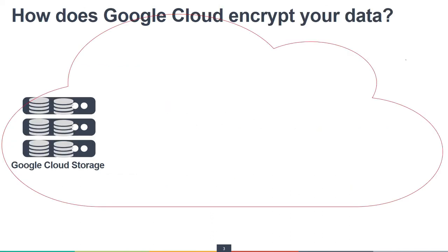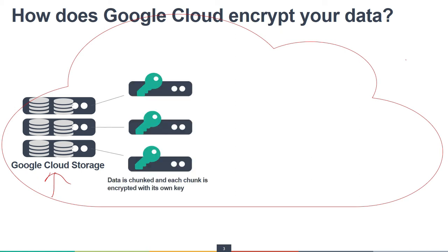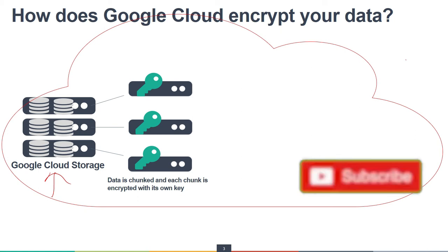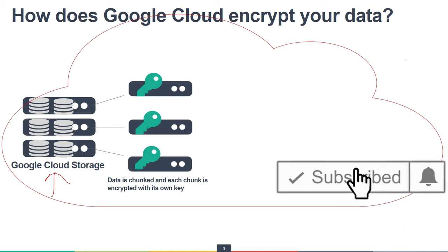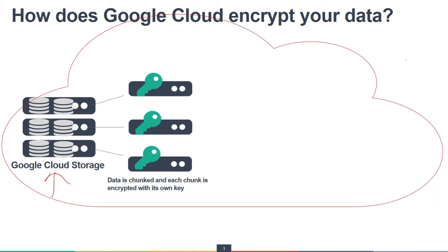This is where we upload the data. Once we upload data or create some content in the cloud, it breaks it into different chunks and each chunk is encrypted with its own key. When data is broken into sub-file chunks for storage, each chunk can be up to several GBs in size, and each chunk is encrypted at the storage level with an individual encryption key.